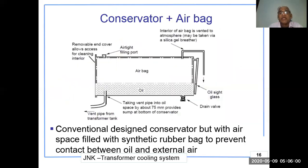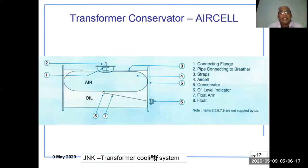The conservator air bag is a modern technology used in larger transformers over the last five years. It uses a conventional conservator design but with the air space filled with a synthetic rubber bag to prevent contact between the oil and external air. Inside, you can see the airbag above the oil, with connections at positions seven and eight to the MOG for operation.